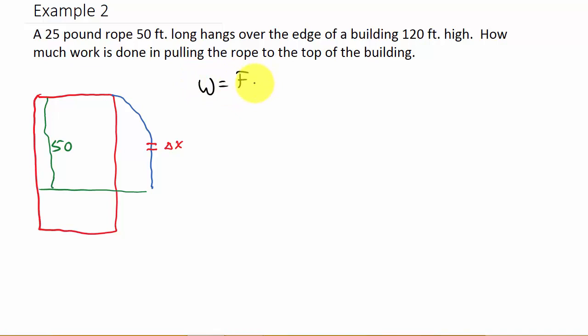Alright, so what we do know is that work is equal to force times distance, force times distance. So, we'll figure out the force in just a second. What's the distance? What's the distance that we're going to pull this rope up? Well, the distance is some number x.